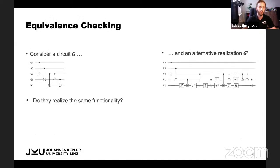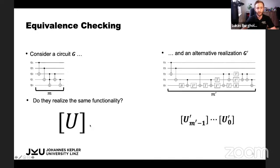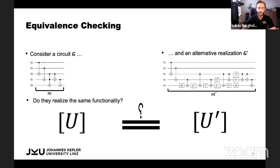So the goal for equivalence checking is we're given two circuits, G and G prime, and we ask ourselves, do these realize the same functionality? Conceptually, this is rather simple because each of the gates of the circuit is represented by a unitary matrix. We can just multiply those up and obtain a system matrix U. We can do the same thing for a second circuit, obtaining a matrix U prime and ask ourselves, are these two matrices identical?